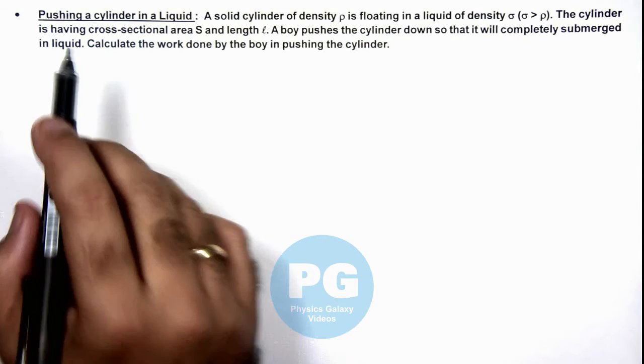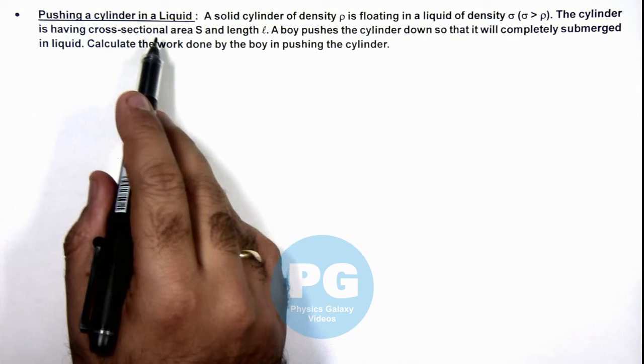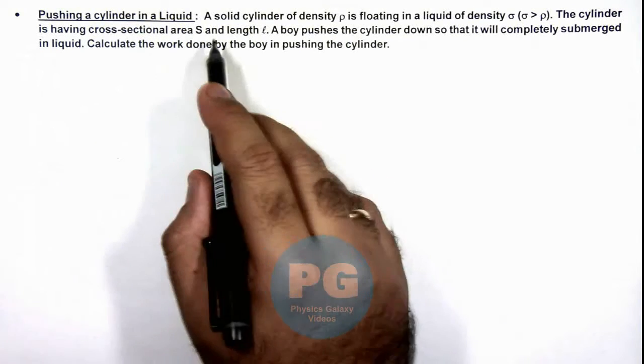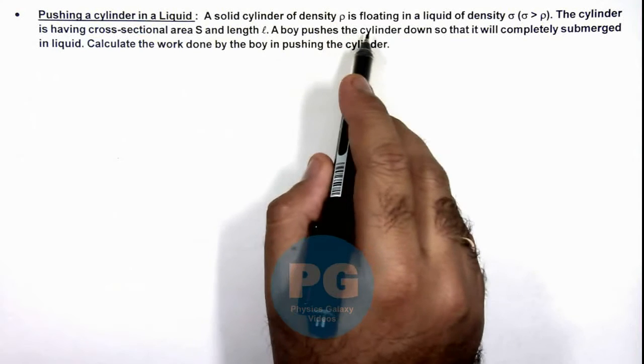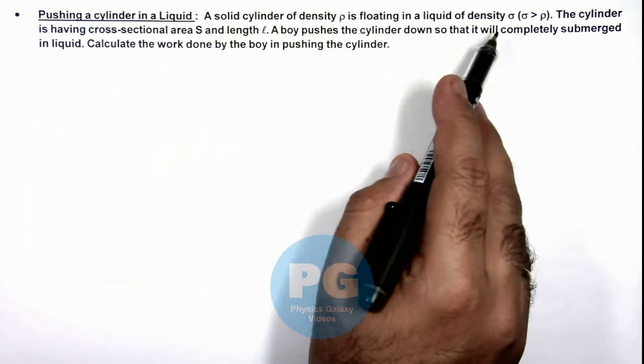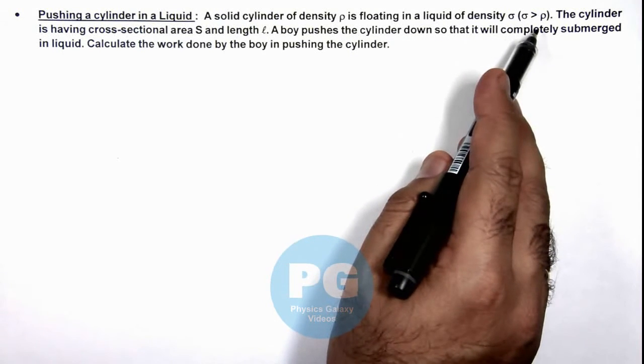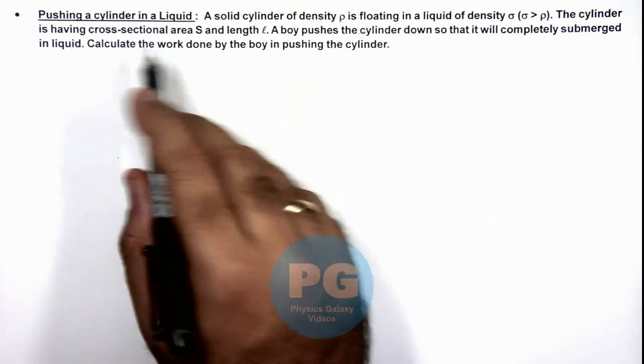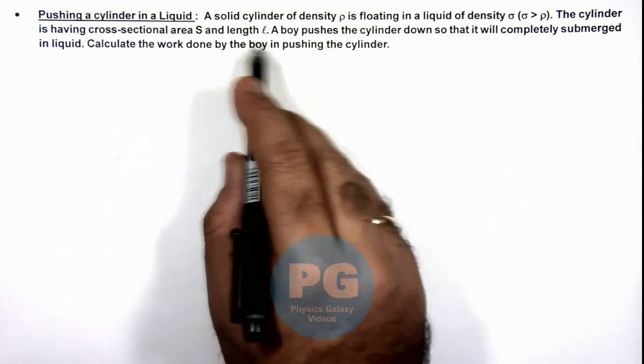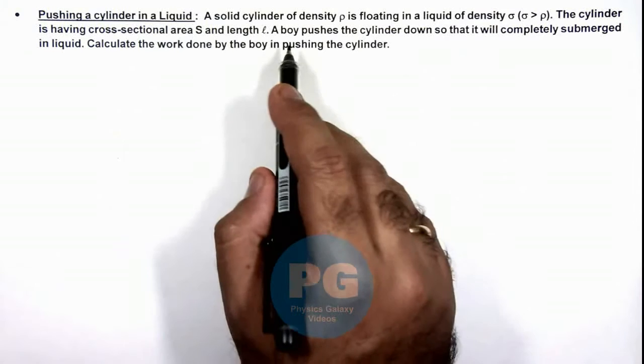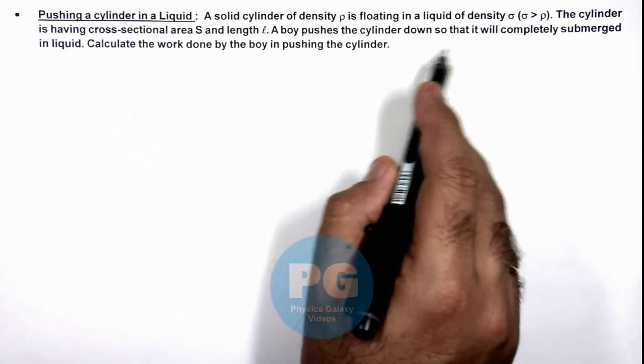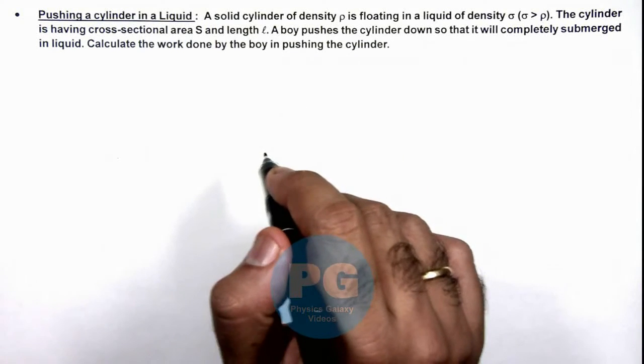In this illustration we'll analyze the case of pushing a cylinder in a liquid. Here we are given that a solid cylinder of density ρ is floating in a liquid of density σ which is greater than ρ. This cylinder is having a cross-sectional area S and length L. A boy pushes the cylinder down so that it will completely submerge in the liquid. We are required to calculate the work done by the boy in pushing the cylinder.